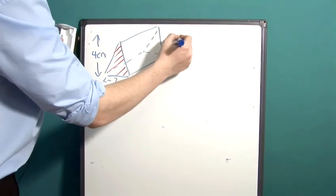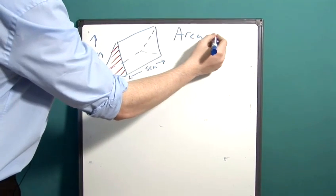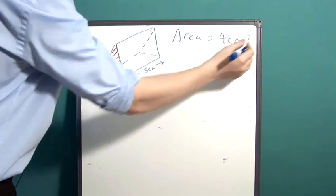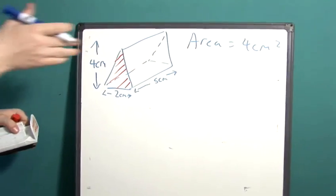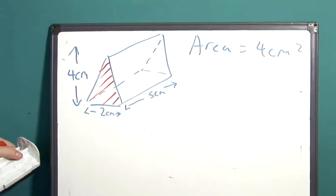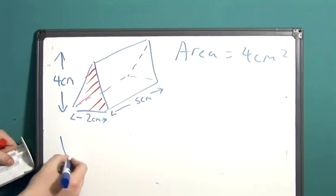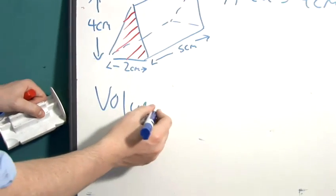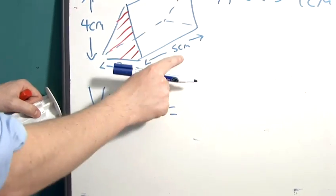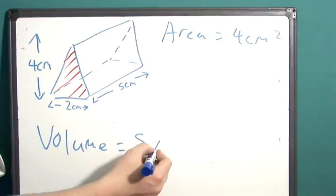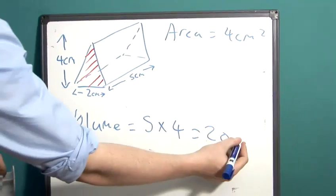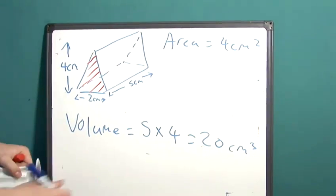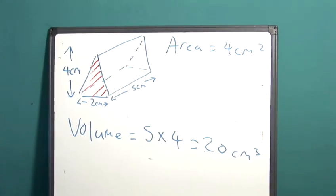I'll write it up here. Now the final step to work out the volume of the prism is to multiply this area by the length. The volume is equal to five multiplied by four which is twenty and we're dealing with centimeters cubed because now we're dealing with a volume which is a 3D measurement.